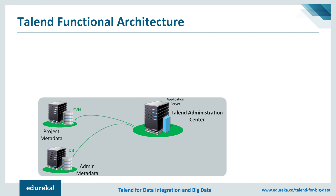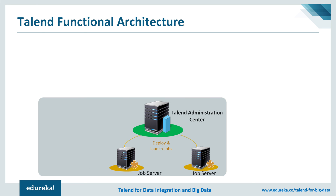The second block includes a web-based administration center, which is the application server connected to two shared repositories — one based on an SVN server and the other on a database server. The administration center enables the management and administration of all projects. Administration metadata like user accounts, access rights, and project authorization is stored in the database server, whereas project metadata like jobs, business models, and routines are stored in the SVN server, making it easy to share them between end users.